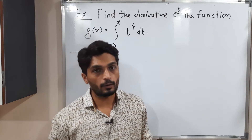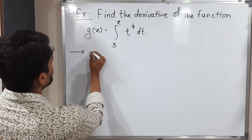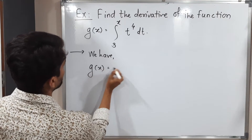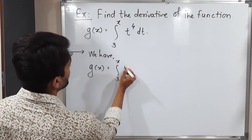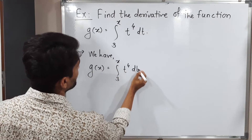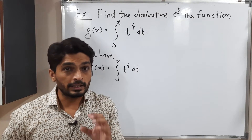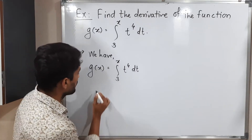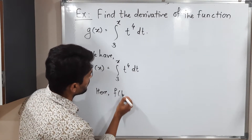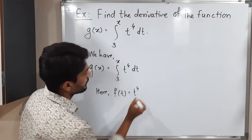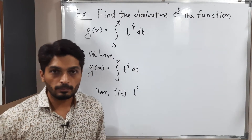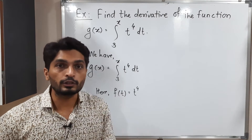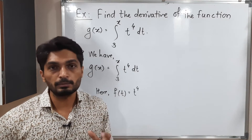We have j of x equal to integration from 3 to x of t raised to 4 dt. Here we are taking an integration of t raised to 4, so this is our f of t. Here f of t is t raised to 4. The first fundamental theorem of calculus says this function should be a continuous function — then only that theorem is applicable.